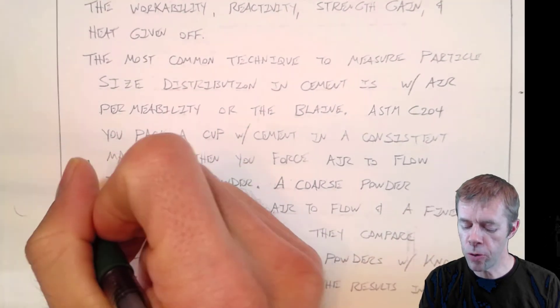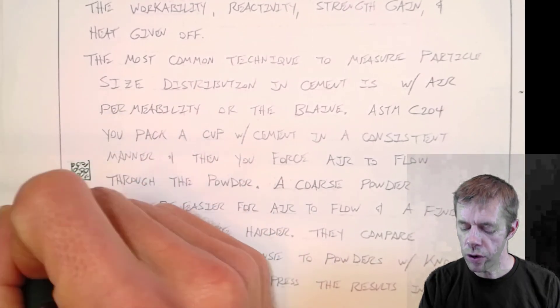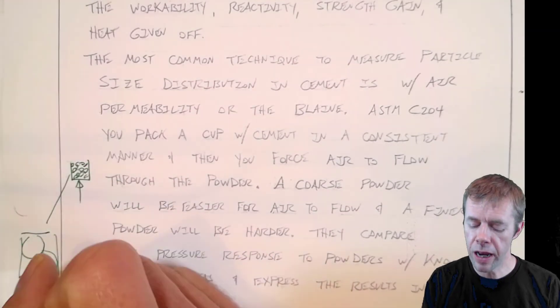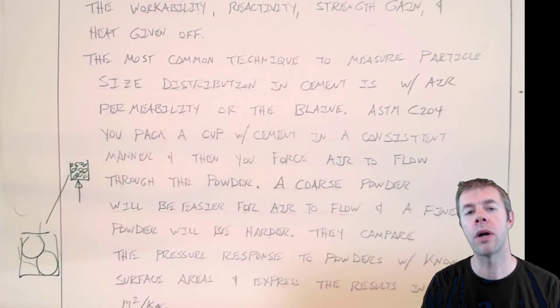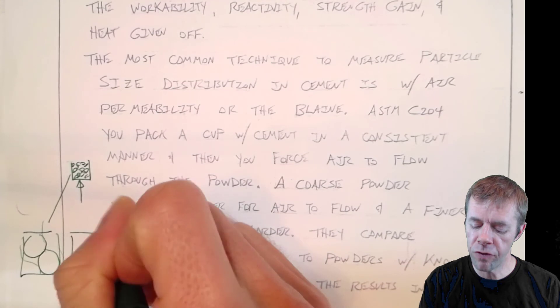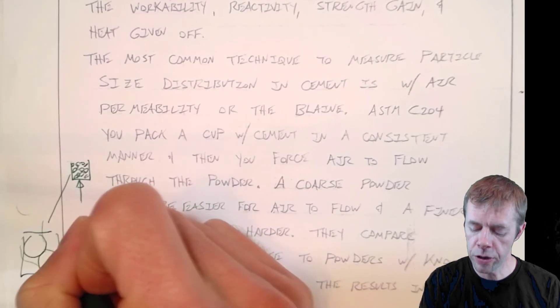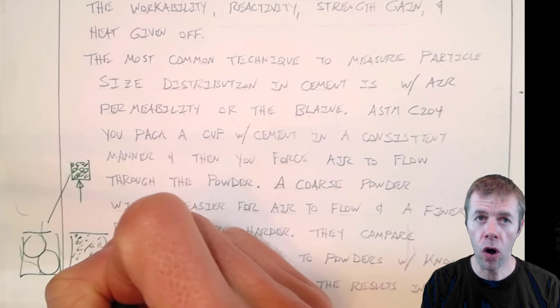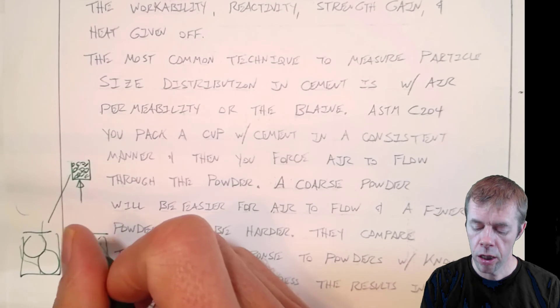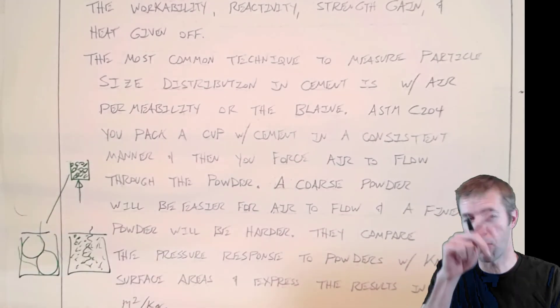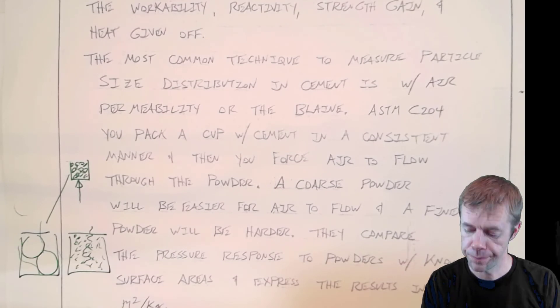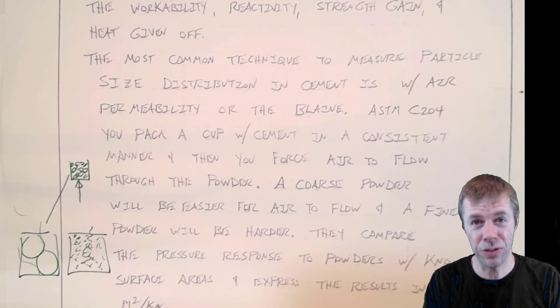If you have mainly large particles, it's pretty easy for that air to get around them. But if I made it up of bunches of small particles, then it's much harder for that air to get through. It's going to be much more work, much more serpentine. It's much harder for the air to pass through the powder. So that's an indication of the surface area.